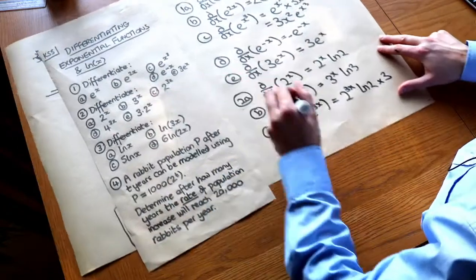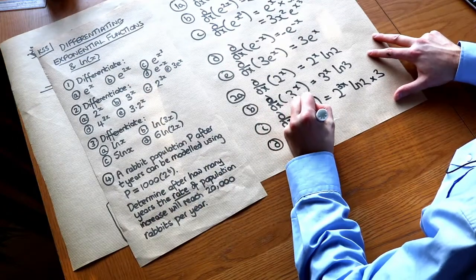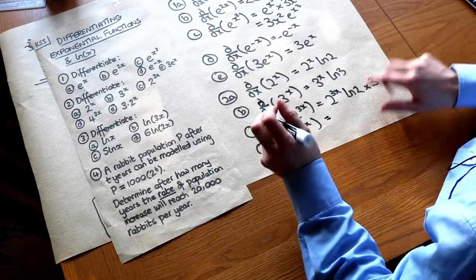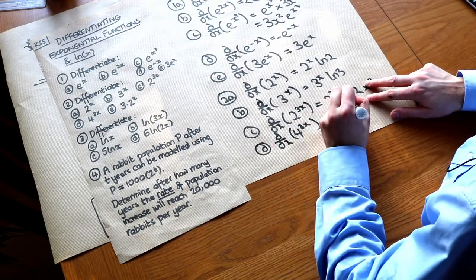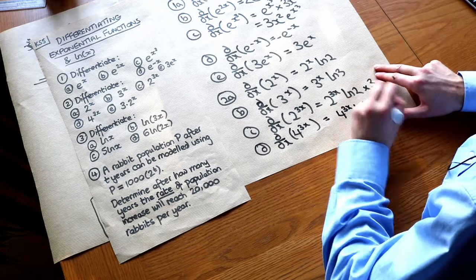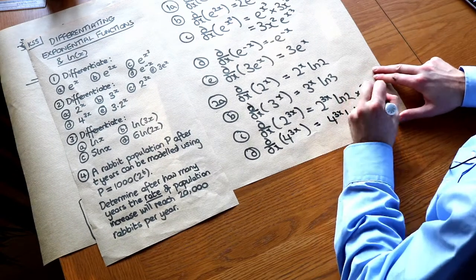What about d? 4 to the 3x differentiated. Again we just multiply by ln of the base. So ln 4. So 4 to the 3x ln 4. But we multiply by the power differentiated. So we get that 3.